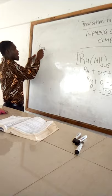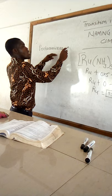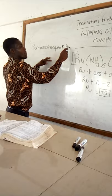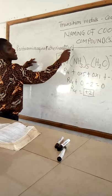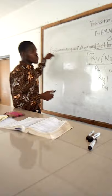The name will be pentaamine aqua ruthenium chloride. Is that okay? So this is the name of this complex compound.